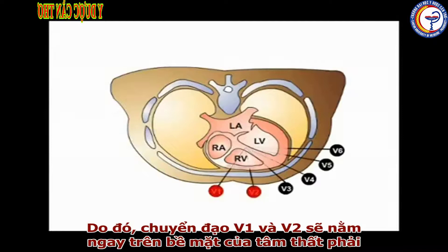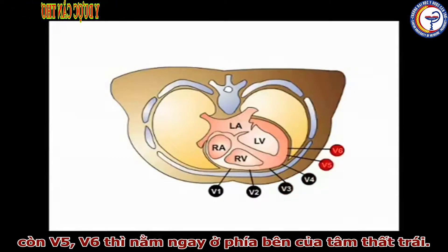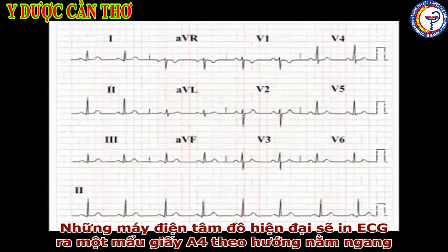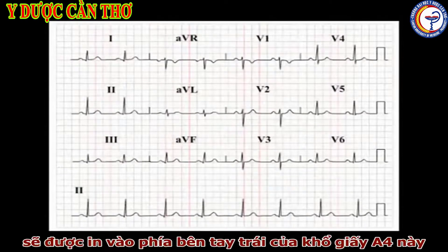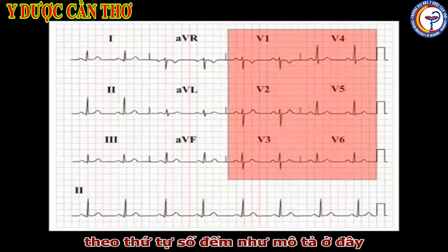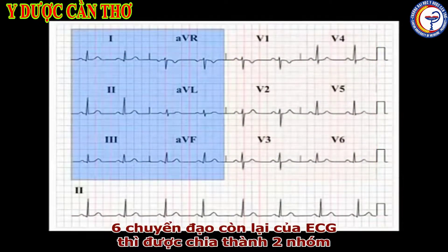Therefore, V1 and V2 face the anterior surface of the right ventricle. V3 and V4 look at the anterior surface of the left ventricle, while V5 and V6 look at the lateral surface of the left ventricle. Modern machines present the printed ECG readout landscaped on an A4 piece of paper, and the signal from each of the chest leads is recorded on the left-hand side in numerical order.